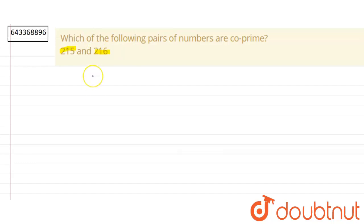Co-prime are the numbers which have only and only one as their common factor. So, let's see whether 215 and 216 have only one as a common factor or not.